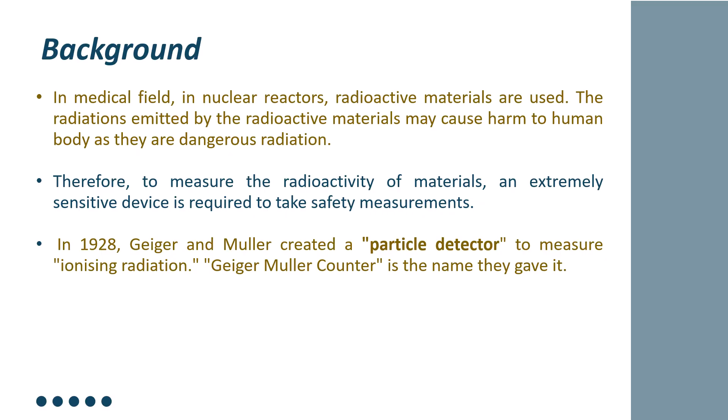In 1928, Geiger and Müller have created a particle detector to measure ionizing radiations emitted by the radioactive elements. They have given that instrument a name like Geiger-Müller counter.